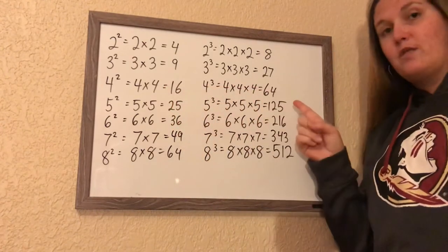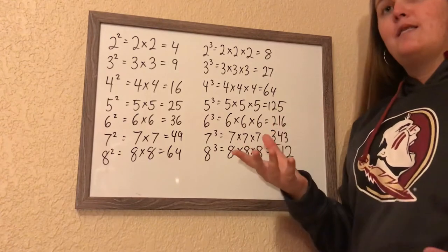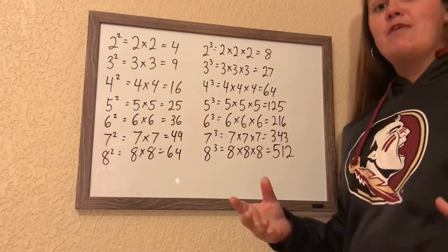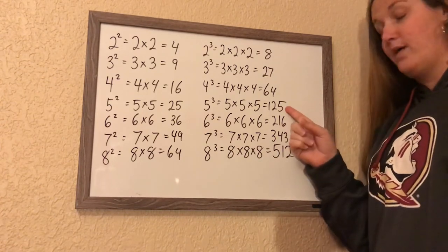This could work the same way when it comes to cube roots. So if I said that I want to find the cube root of 70, 70 falls here between 64 and 125.